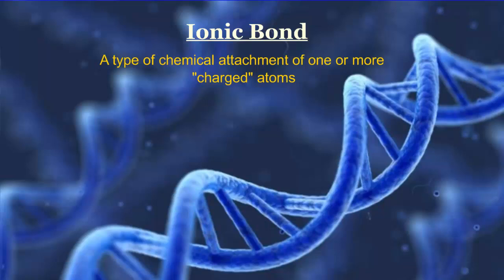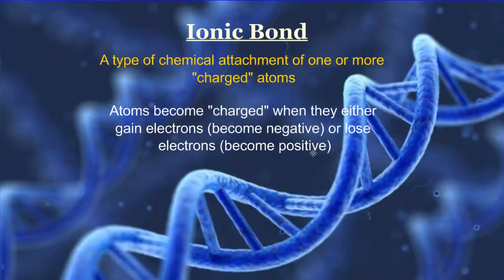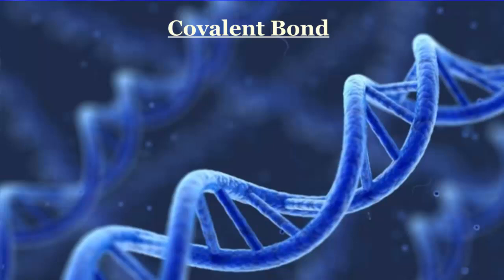Atoms become charged when they either lose or gain electrons. If they gain electrons they become negative; if they lose electrons they become positive. Ionic bonds are formed when opposites — negatives and positives — come together, much like opposite ends of a magnet. An example you'd be familiar with is sodium chloride, or table salt, a molecule created via ionic bonding.